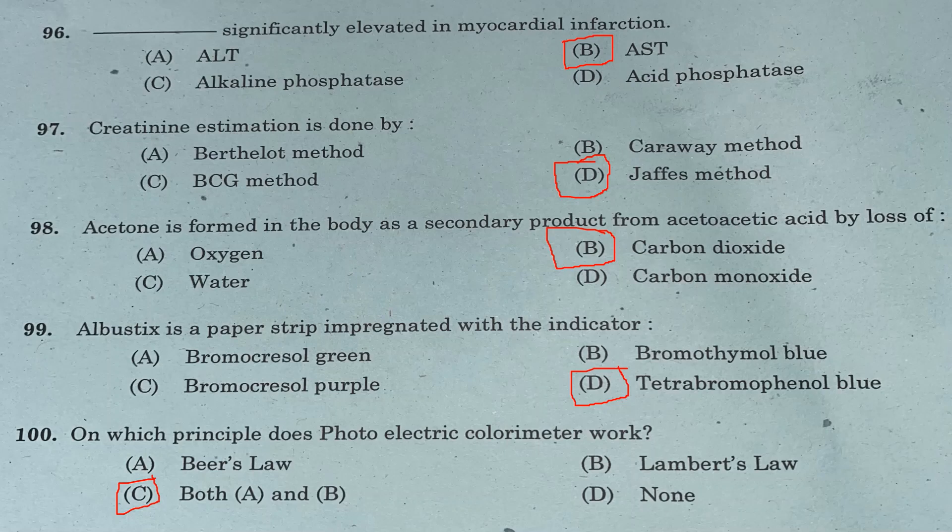Question 100, the last question: On which principle does a photoelectric colorimeter work? Option A: Beer's Law. Option B: Lambert's Law. Option C: both A and B. Option D: none. Answer is Option C, both A and B.